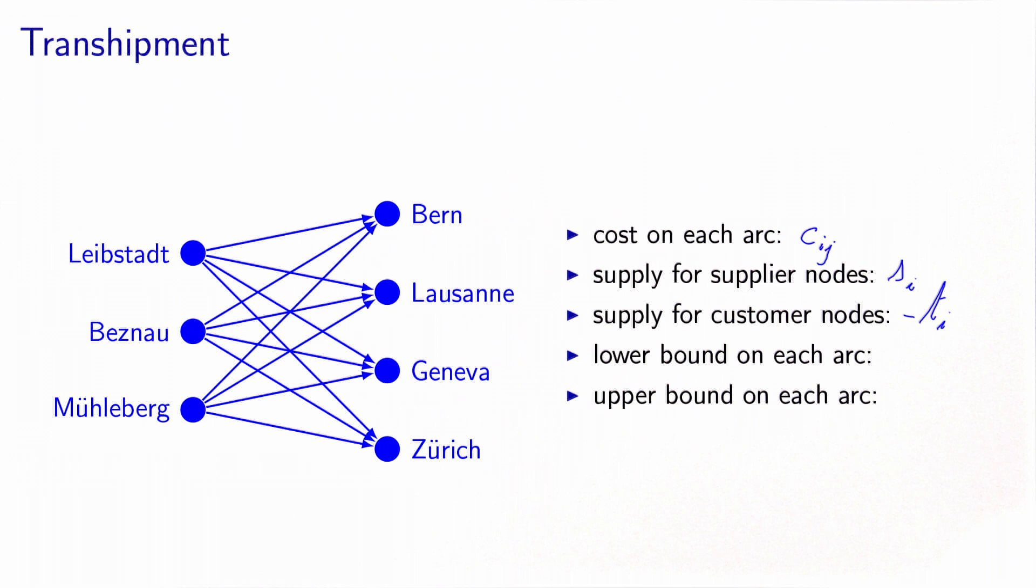The supply for customer nodes is minus Ti, where Ti is the quantity of energy consumed by the city. And we need to put minus because it's a demand node.